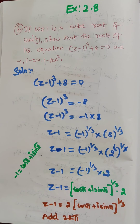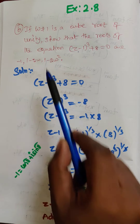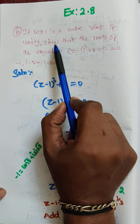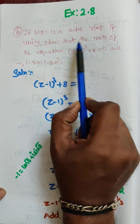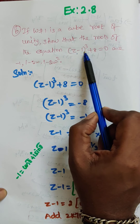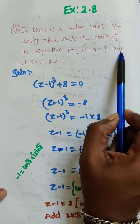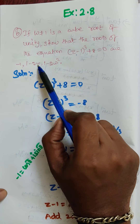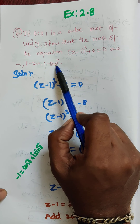Hi students, this is Dinesh here. Today we are going to discuss exercise 2.8, question number 6. If omega is not equal to 1 and is a cube root of unity, show that the roots of the equation z minus 1 the whole cube plus 8 equal to 0 are minus 1, 1 minus 2 omega, and 1 minus 2 omega square.